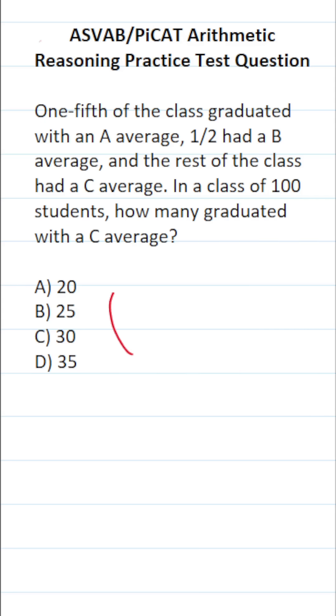In case it's helpful, let's take a look at this one visually with a pie chart. According to the problem, one-half of the class graduated with a B average, one-fifth of the class graduated with an A average, and the rest of the class graduated with a C average.